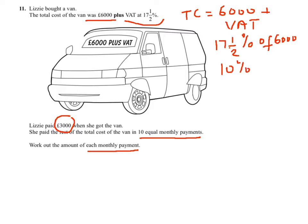10% is £600 divided by 10. 5% is half of the £600, half of 10% which is £300, and 2.5% is half of 5% which is £150. So the VAT in total is £1,050.